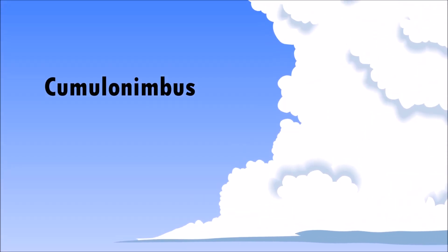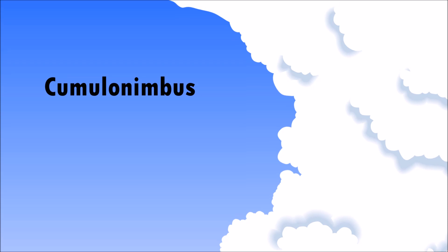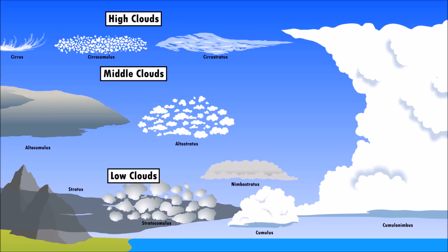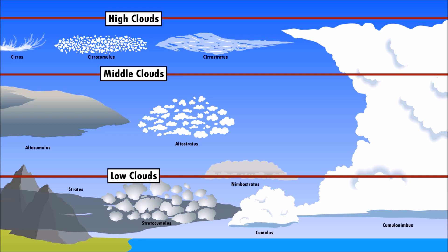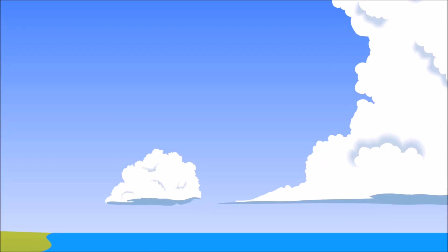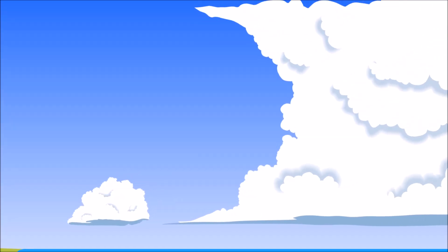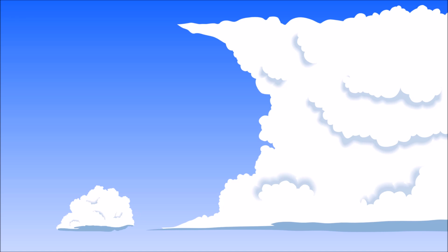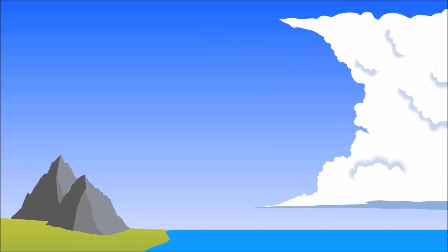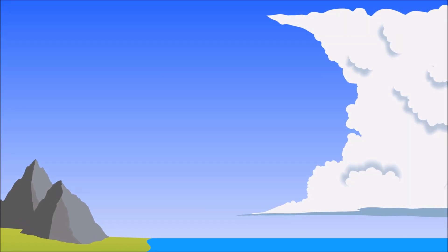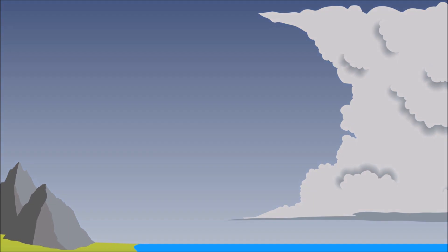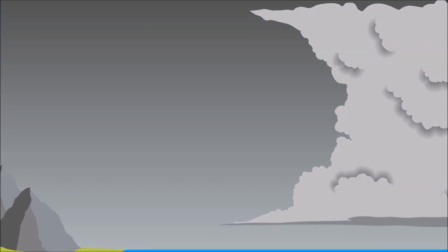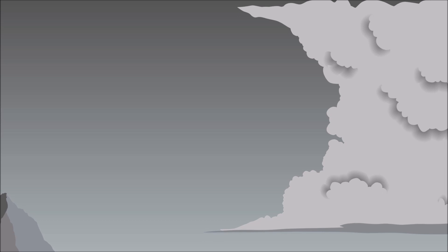Cumulonimbus clouds are the biggest types of clouds. They are spread out across the low, middle, and high levels of the atmosphere. They are a much larger version of cumulus clouds but are usually flat on the bottom and the top. If you see a cumulonimbus cloud, it probably means that a thunderstorm is coming, because they are the only clouds that can produce thunder and lightning.